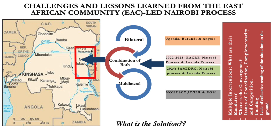Within these multilateral mechanisms, there are also a number of verification mechanisms. The Luanda process has an ad hoc verification mechanism. The ICGLR has an Extended Joint Verification Mechanism. The East African Community put in place the East African Verification Mechanism. All these mechanisms — who are they reporting to? How is information being collected and shared, and with whom? It became a source of confusion.